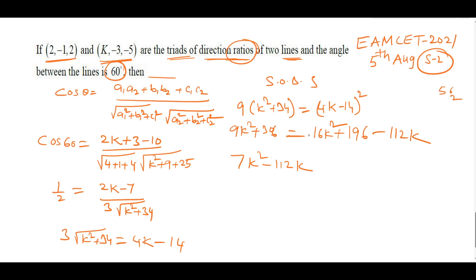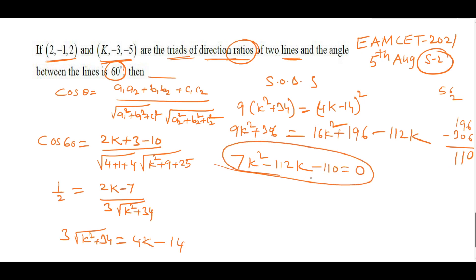Therefore the relation between k is 7k² − 112k − 110 = 0. This is the required answer.